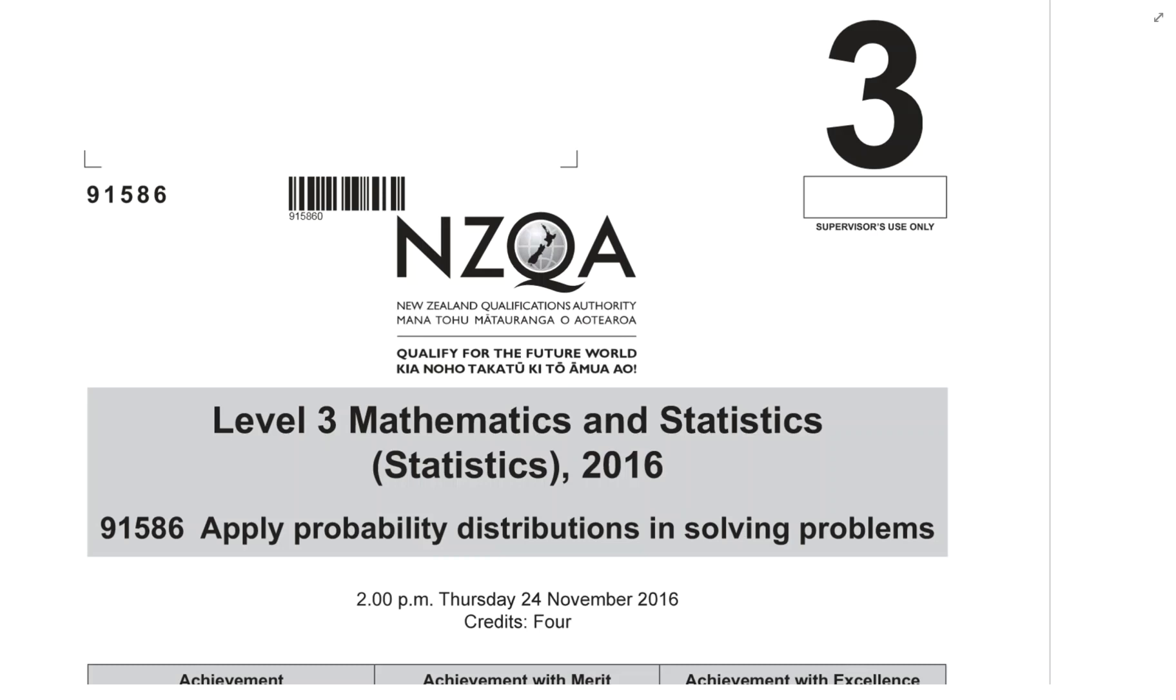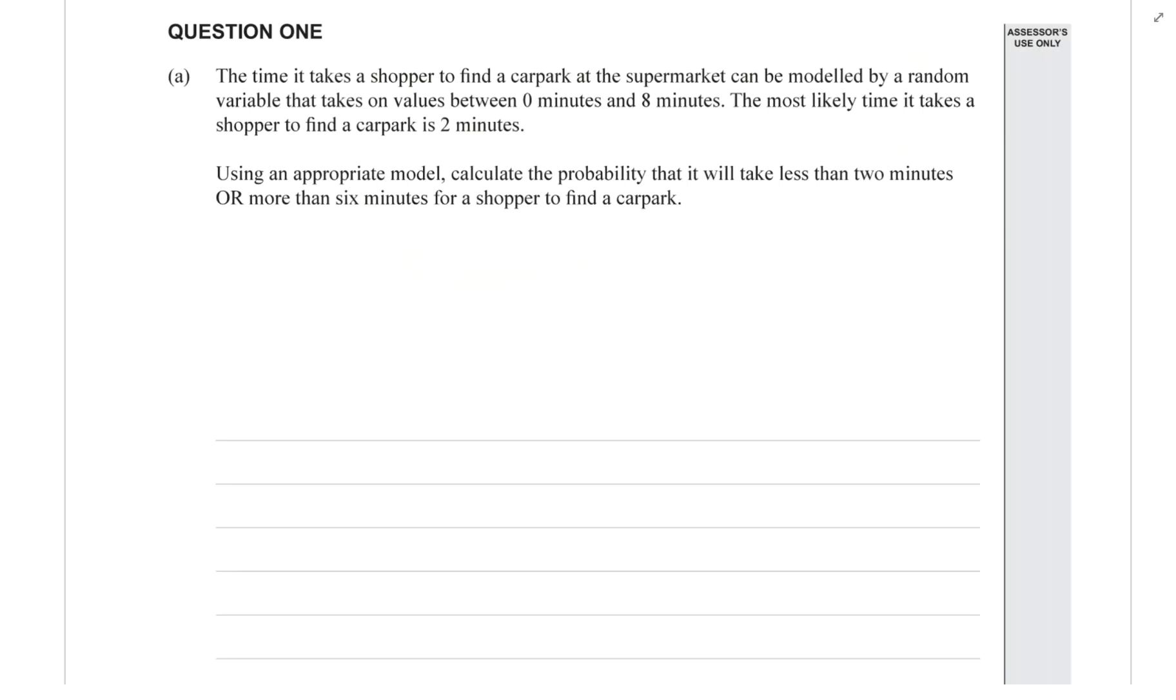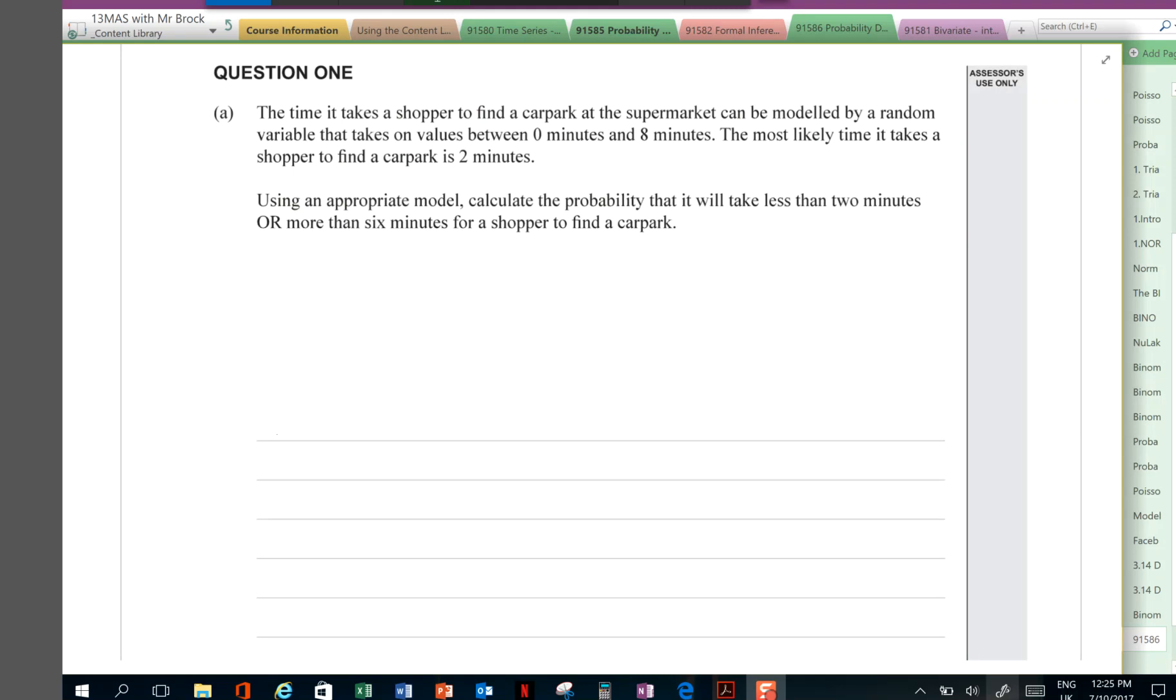Looking at question one, we'll start by reading the goal of the question, usually the last sentence. Using an appropriate model, calculate the probability that it will take less than two minutes or more than six minutes for a shopper to find a car park.